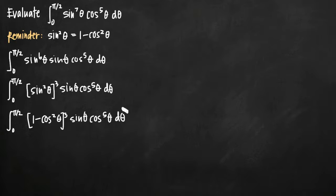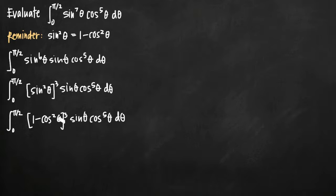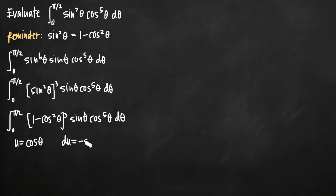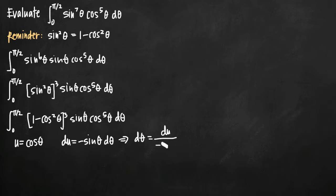Once you've made that substitution, now you want to go ahead and make a u-substitution. The u-substitution we want to make is for cosine in this case — whatever's inside the parentheses is what you want to make your u substitution for. So we're going to set u equal to cosine of theta. Whenever we make a u substitution we take the derivative of u to get du. The derivative of cosine is negative sine, so we get negative sine of theta d theta. We solve for d theta by dividing both sides by negative sine of theta, giving us d theta equals du over negative sine of theta.